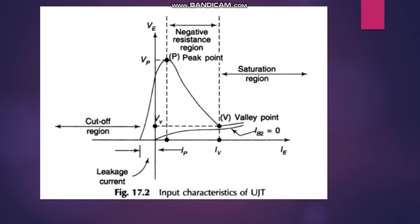Looking at the input characteristics of the UJT: up to the peak point region, the diode is in the cut-off region. After the peak point, there is a negative resistance region. After this valley point, it enters the saturation region where positive resistance remains dominant.